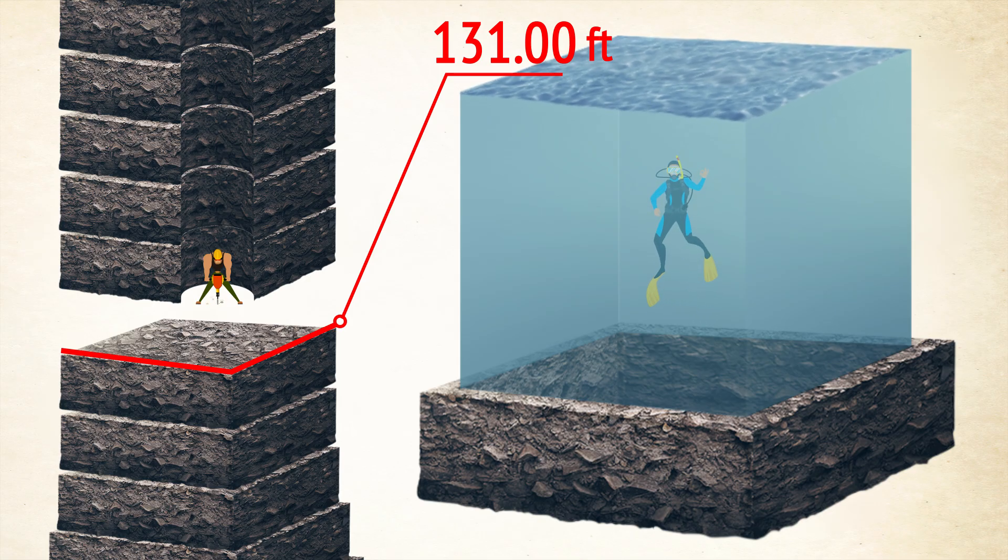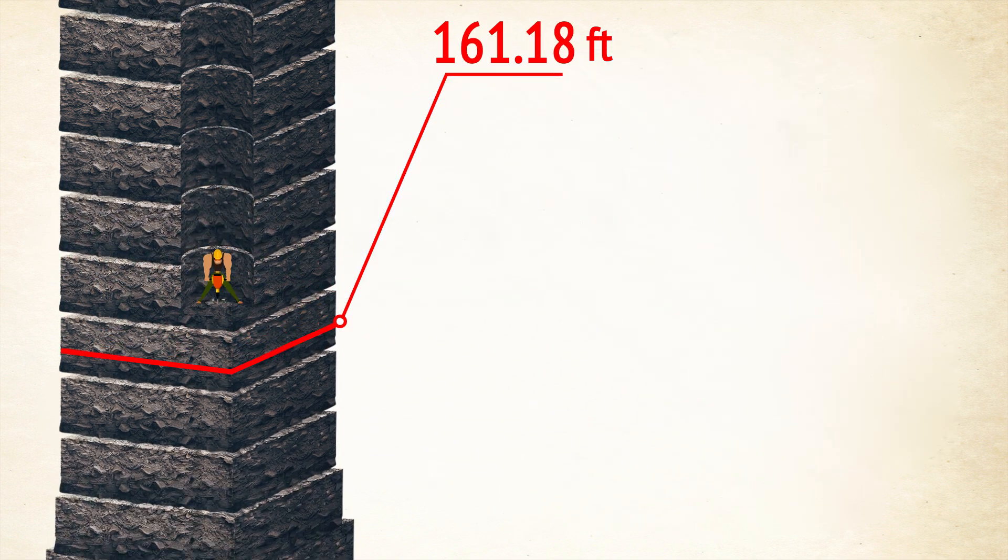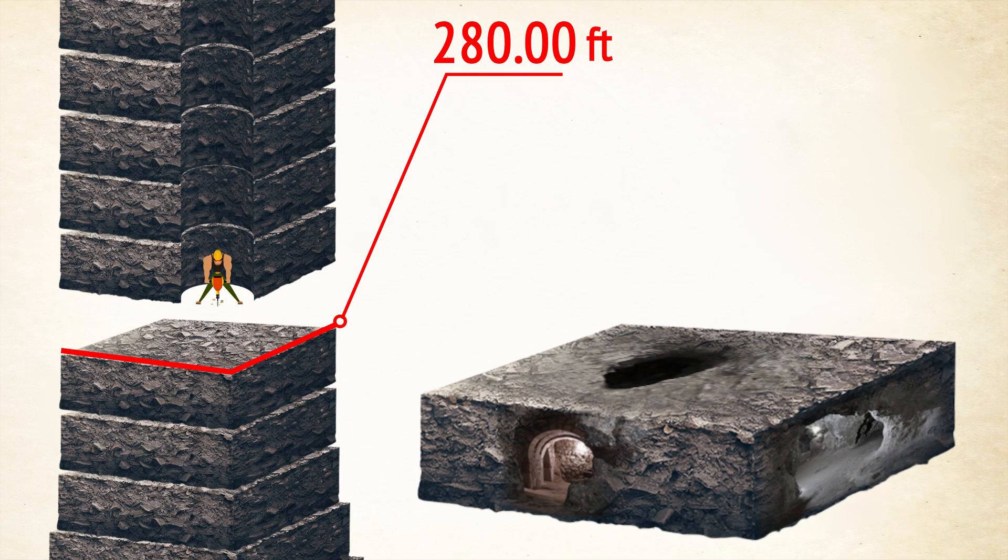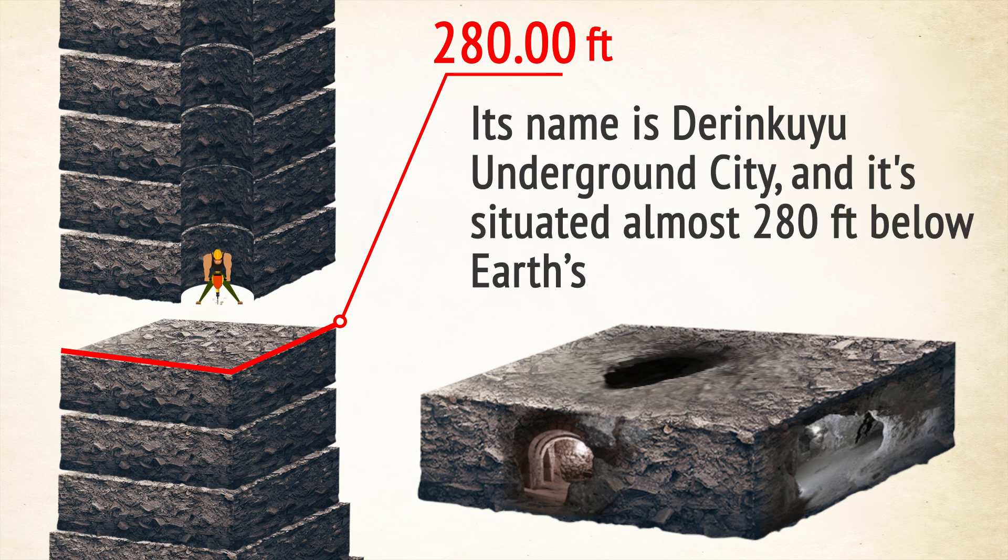In Cappadocia, Turkey, there's an underground complex that probably dates back to the 7th century. Its name is the Derinkuyu Underground City, and it's situated almost 280 feet below Earth's surface.